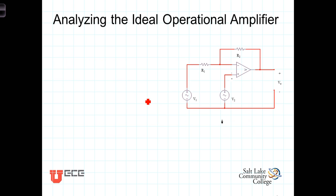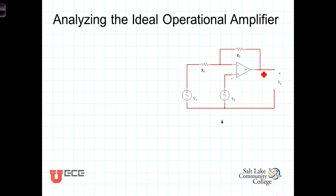Now let's quickly review how we can analyze circuits involving operational amplifiers using those ideal op-amp approximations. Here's our inverting terminal, our non-inverting terminal, and here's the output. You'll notice there are two different input voltages: V1 connected to the inverting terminal, and V2 connected to the non-inverting terminal. There's a feedback resistor going from the output terminal back to the inverting input terminal. This feedback resistor provides negative feedback, which constrains the output so that the amplifier remains in its linear range. We'll derive an expression for the output voltage in terms of the two input voltages and the resistors in the circuit.